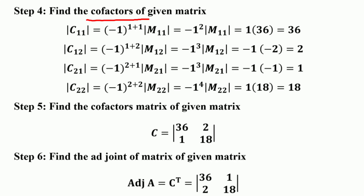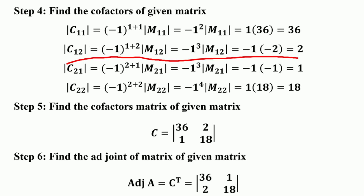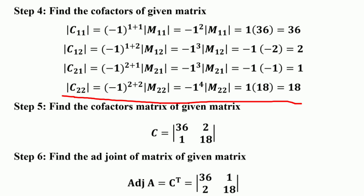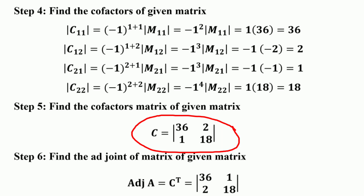After finding the minors, we find the cofactors. C₁₁ = (−1)^(1+1) × 36 = 1 × 36 = 36. C₁₂ = (−1)^(1+2) × (−2) = −1 × −2 = 2. C₂₁ = (−1)^(2+1) × (−1) = −1 × −1 = 1. C₂₂ = (−1)^(2+2) × 18 = 1 × 18 = 18. So the cofactor matrix is [36, 2; 1, 18], where each cofactor is substituted for the corresponding element.